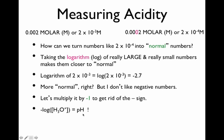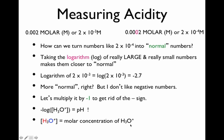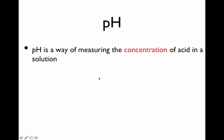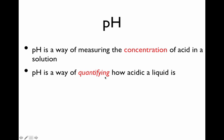There is a slightly more technical formula for pH, but unless you're a chemistry major, you won't need it. So pH equals −1 times the logarithm of the H3O+ concentration in molarity — the square brackets mean molar concentration of H3O+. pH is simply a way of measuring the concentration of acid in a solution numerically — quantifying how acidic a liquid is.